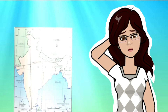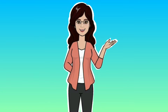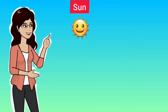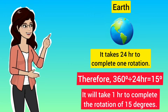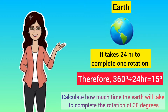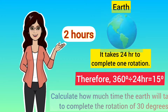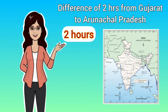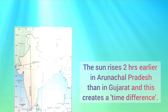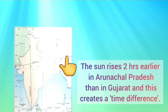Any idea how much time the sun will take to reach from the easternmost longitude to the westernmost longitude? The earth takes 24 hours to complete one rotation, therefore it takes one hour to complete the rotation of 15 degrees. So the earth will take two hours to complete the rotation of 30 degrees. Thus there will be a difference of two hours from Gujarat to Arunachal Pradesh — the sun rises two hours earlier in Arunachal Pradesh than in Gujarat.